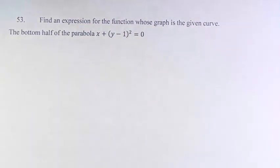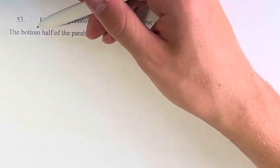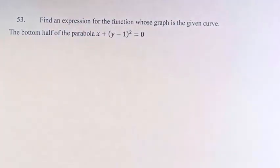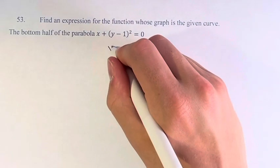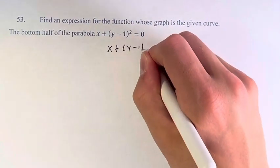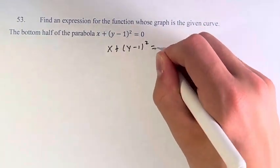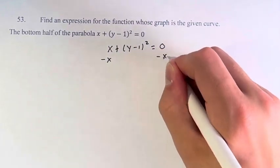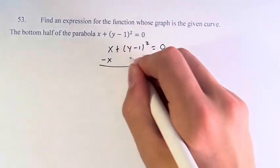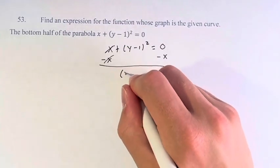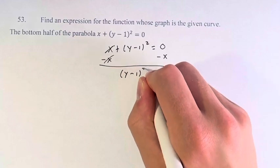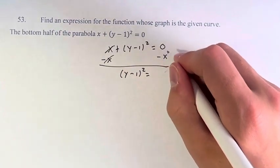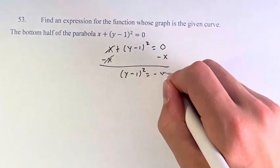To find this, we have to think about what it means for the bottom half of the parabola to exist. First, let's solve for y. We have x plus y minus 1 squared is equal to 0. Subtract x to get y on its own, and we're left with y minus 1 squared is equal to negative x.